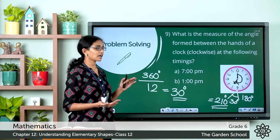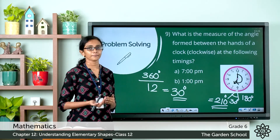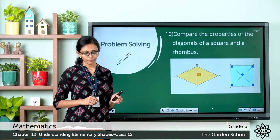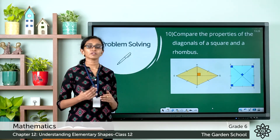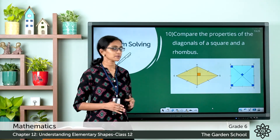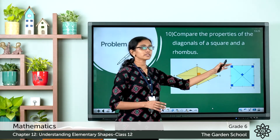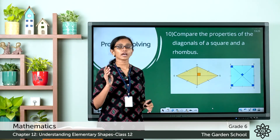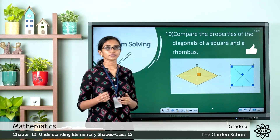Find the angle between the hands of the clock when the hour hand is at 1, that is when it is 1 pm. Now let's discuss question 10: compare the properties of the diagonals of a square and a rhombus. A square is a rectangle with all four sides equal, all angles are right angles, and the diagonals bisect each other at right angles and are equal in length.